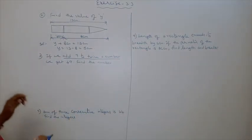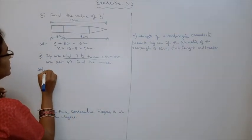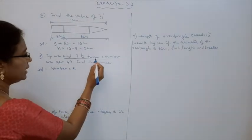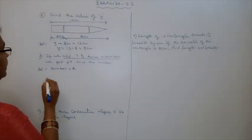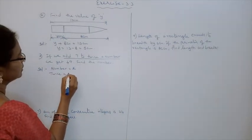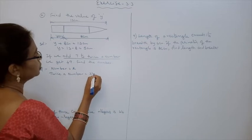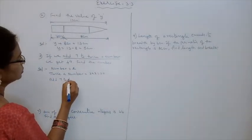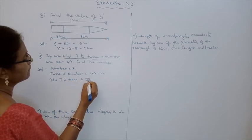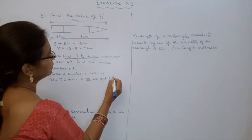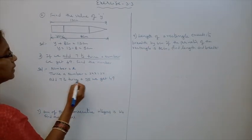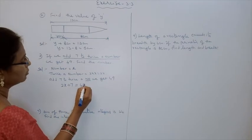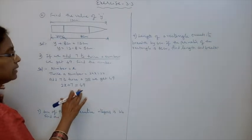Now we have to solve the problem. First, assume number is equal to x. We need twice a number, which is 2 into x, equal to 2x. Add 7 to twice a number and we get 49: that means 2x plus 7, we get means is equal to 49. What is the simple equation as per this problem? 2x plus 7 is equal to 49.